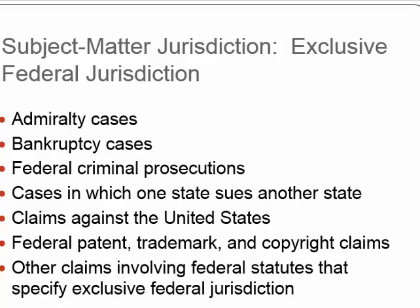Some courts — typically federal courts — have exclusive jurisdiction over exclusive subject matter. Bankruptcy is federal law, federal criminal prosecutions are federal law, and patent, trademark, and copyright claims are all intellectual property — so they go to federal court. Another layer of the onion is asking: is this a federal case or a state case? Federal courts are bigger and have more powers; state courts have fewer powers, given to them by the state constitution.